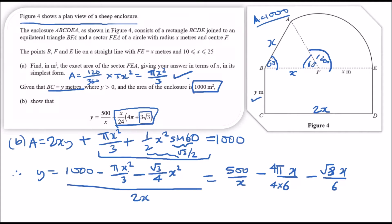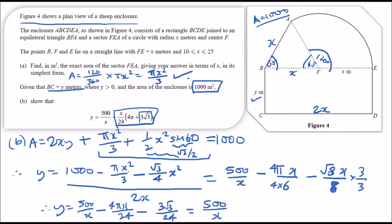To match the desired form, we put everything over a common denominator of 24. Multiplying up and down as needed: πx/6 becomes 4πx/24, and √3x/8 becomes 3√3x/24. Factorizing gives y = 500/x − x(4π + 3√3)/24, which is exactly the required expression. Part (b) done.